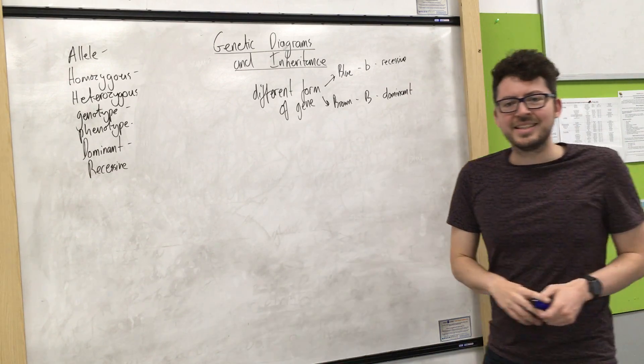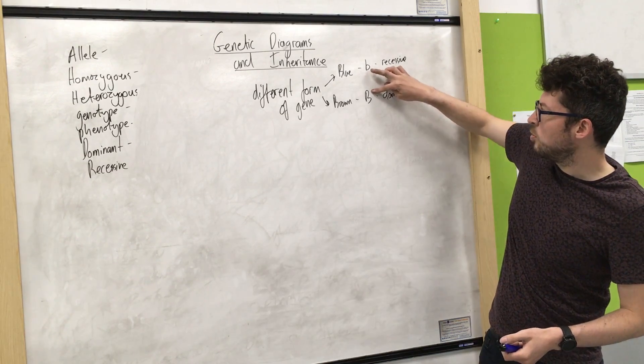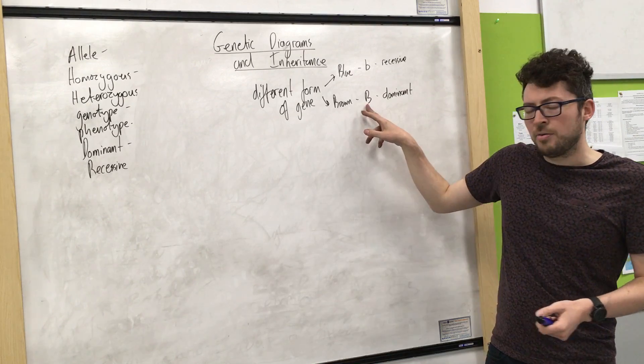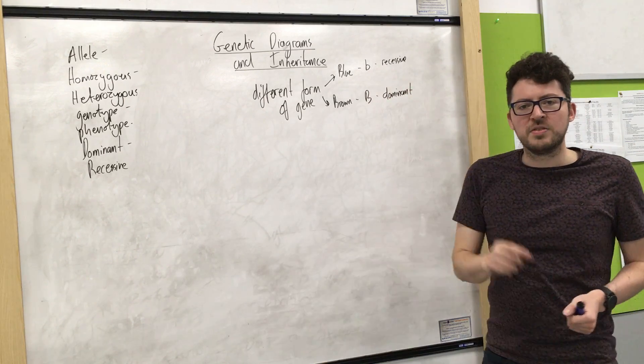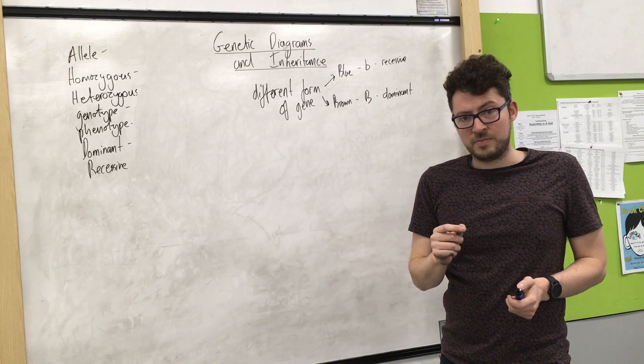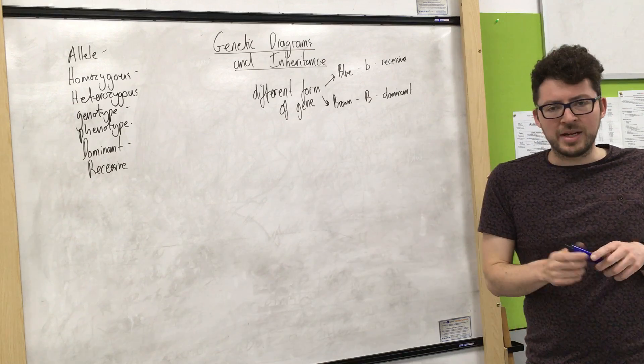All that means is that if I inherited one brown and one blue my eyes would be brown because it's dominant. To get blue eyes I must inherit two copies of the blue allele. So I'm going to show how we inherited that.